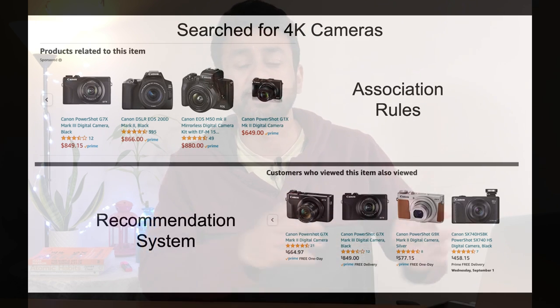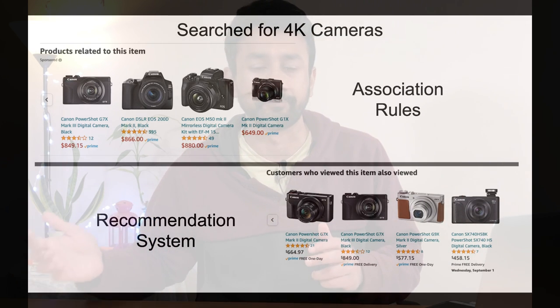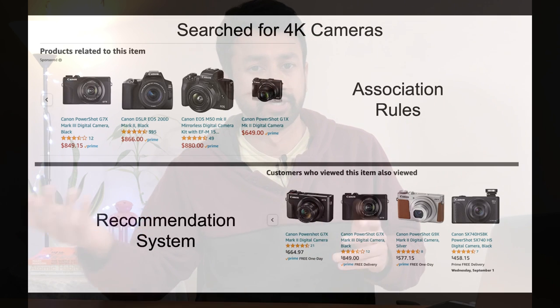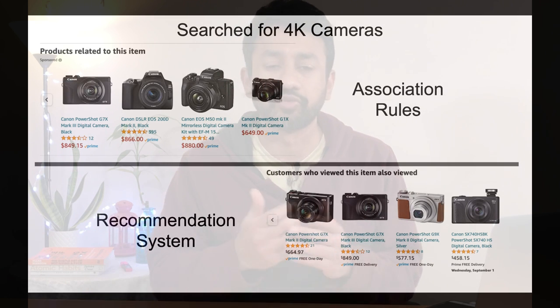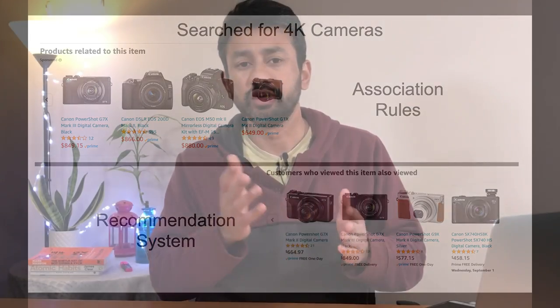At the bottom, the recommendations are based on a recommendation system — it identifies other similar users and sees what those users have been looking for, then produces those cameras as suggestions. These are real-life examples of how association rule mining is being used to improve sales. If you read about the Amazon case study, the recommendation system helped improve their sales by over 40%.